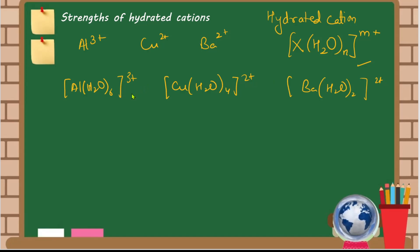Now the hydration energy for aluminium ion is minus 320, for copper that is minus 75, and for barium it is minus 30.